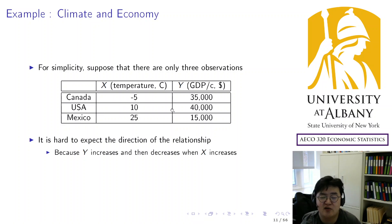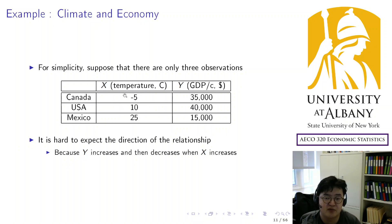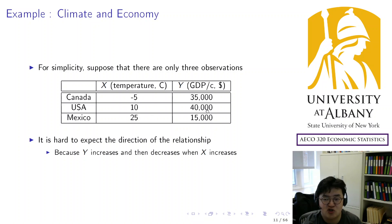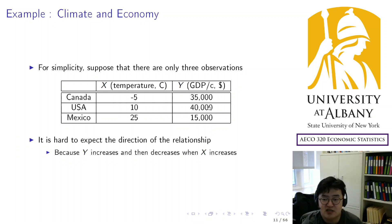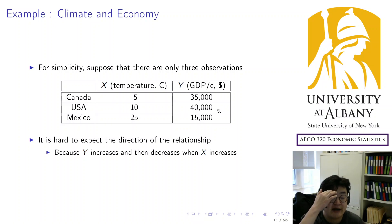Just without calculating the covariance, it is not easy to see the direction because the temperature is ordered from lowest to highest. As the temperature increases, GDP per capita first increased and then drops a lot. If GDP per capita were consistently decreasing or increasing, the direction would be pretty easily determined. But while temperature is increasing, GDP per capita does not have any clear pattern.